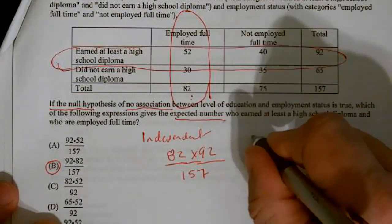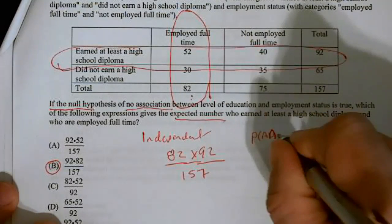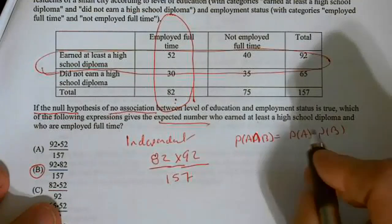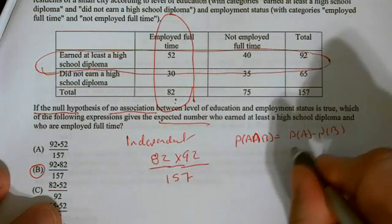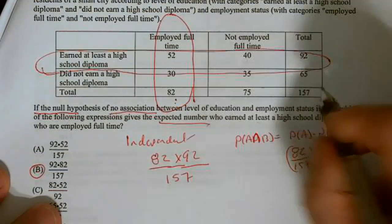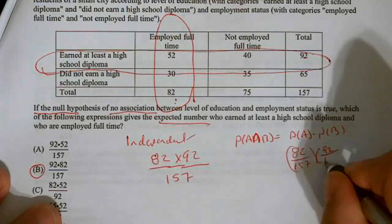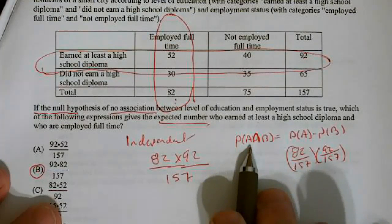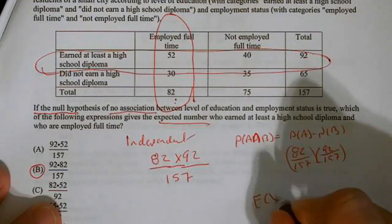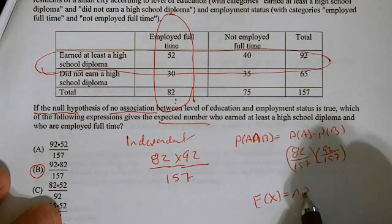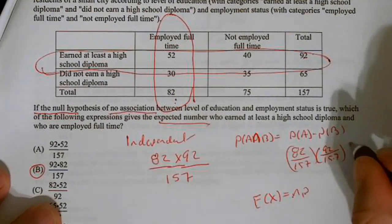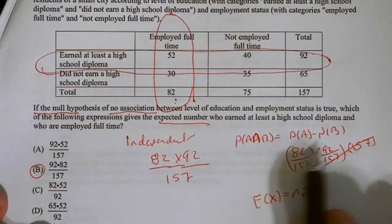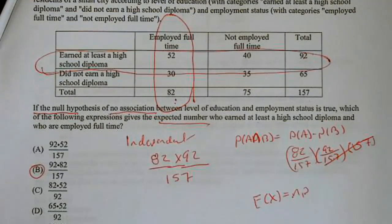But the other way to think about it is we know that the probability of A and B equals the probability of A times the probability of B. Well, that's true if they're independent, in which case, we would have gone 82 times 157 times 92 over 157. And that would have given us our probability, but we want the expected value. Well, the expected value is essentially N times P, or the sample size times the probability. There's our probability, so I need to come back and multiply by the sample size of 157. And those cross out, and once again, 82 times 92 divided by 157. And regardless which way you approach it, you get B.